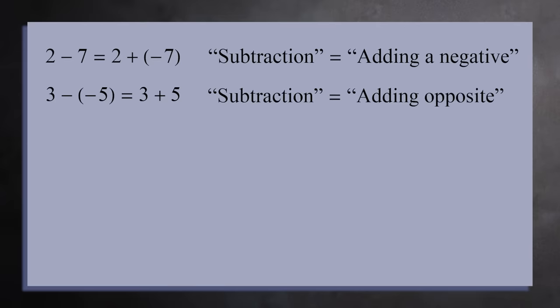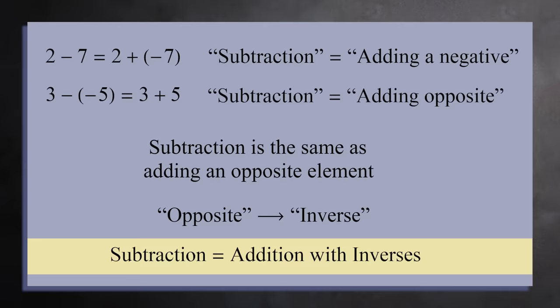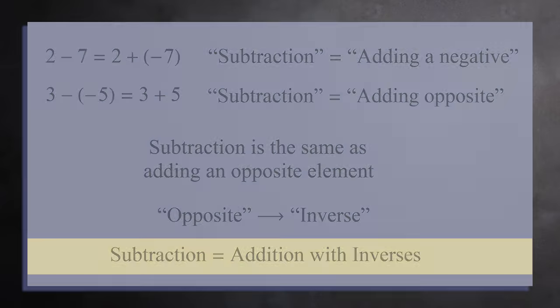Two minus seven is the same as two plus negative seven. So here, subtraction is the same as adding a negative integer. Also three minus negative five is the same as three plus five, so in this example, subtracting negative five is the same as adding the opposite, which is five. These examples show that subtraction is the same as adding an opposite element. But we use the word inverse instead of opposite. So in abstract algebra, subtraction is the same as addition with inverses.